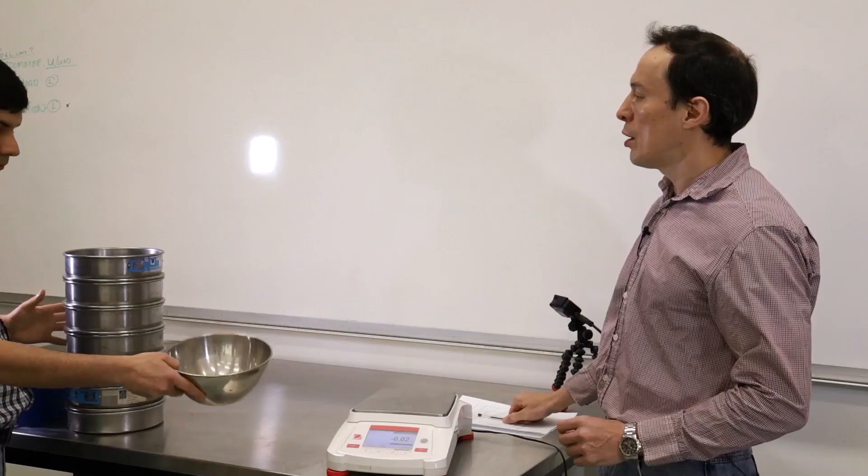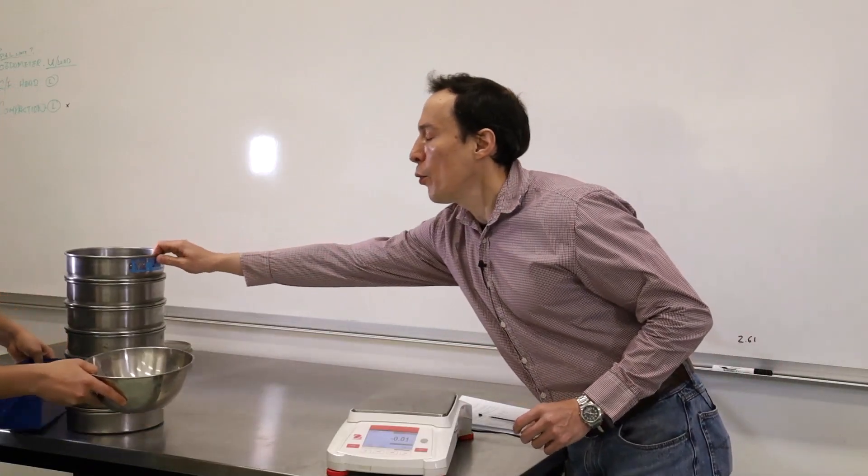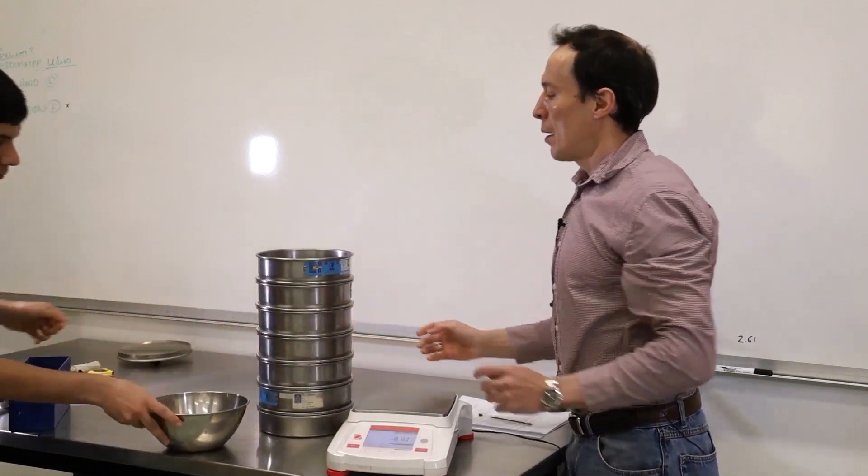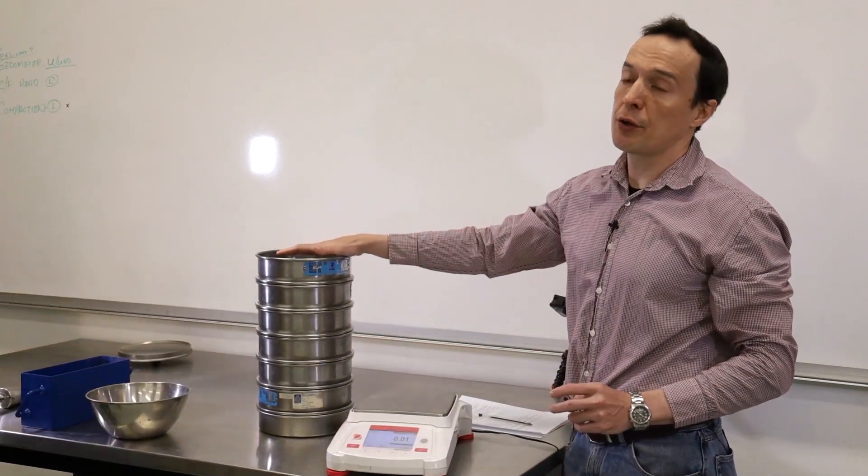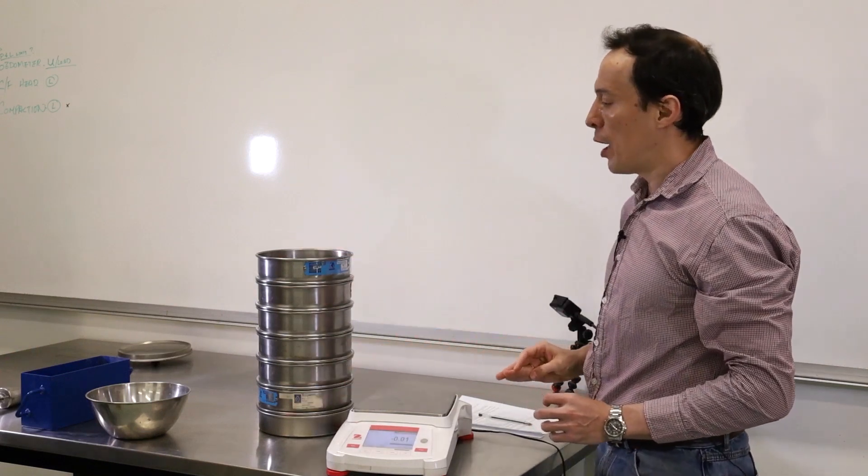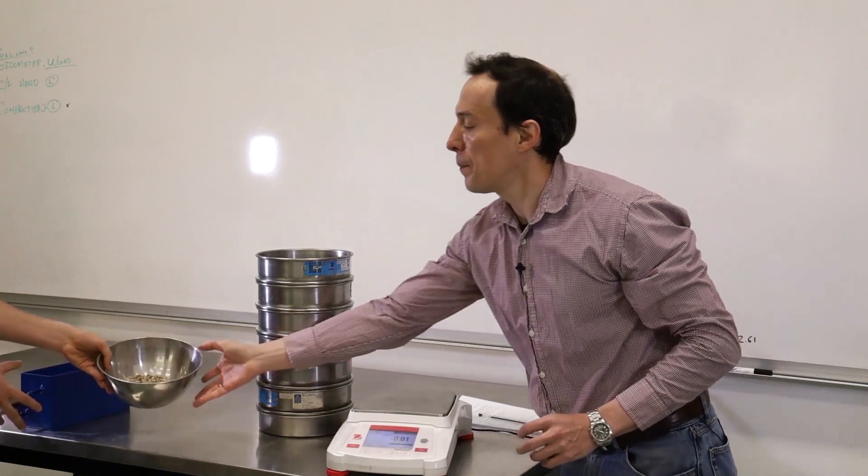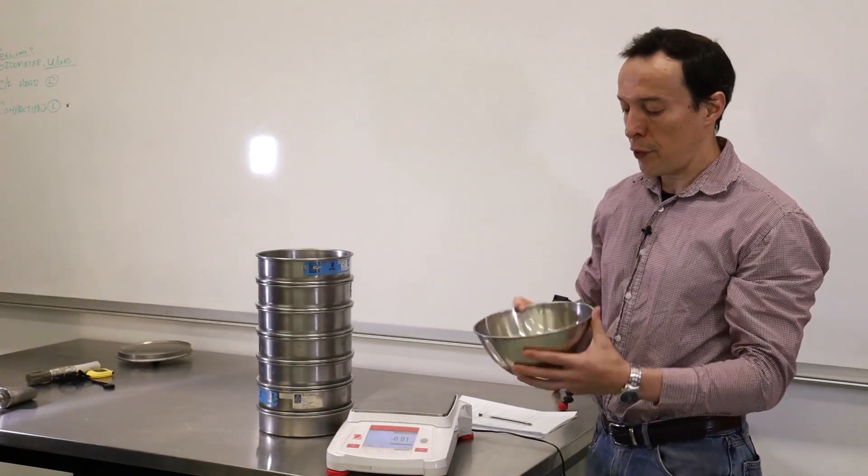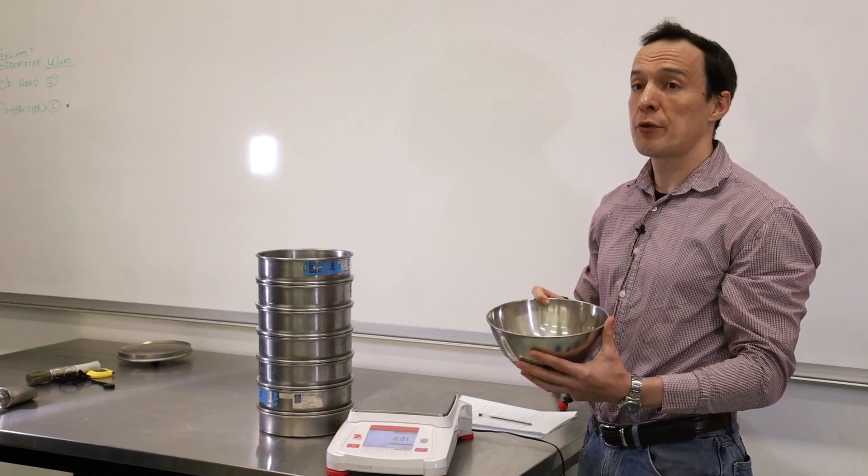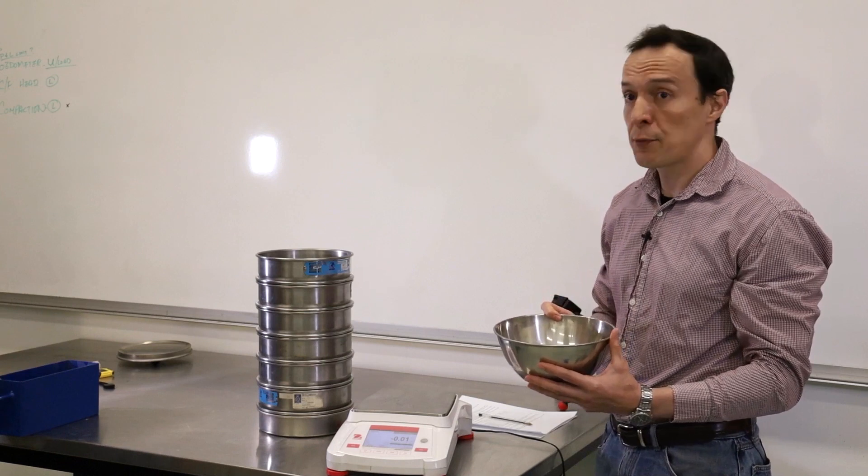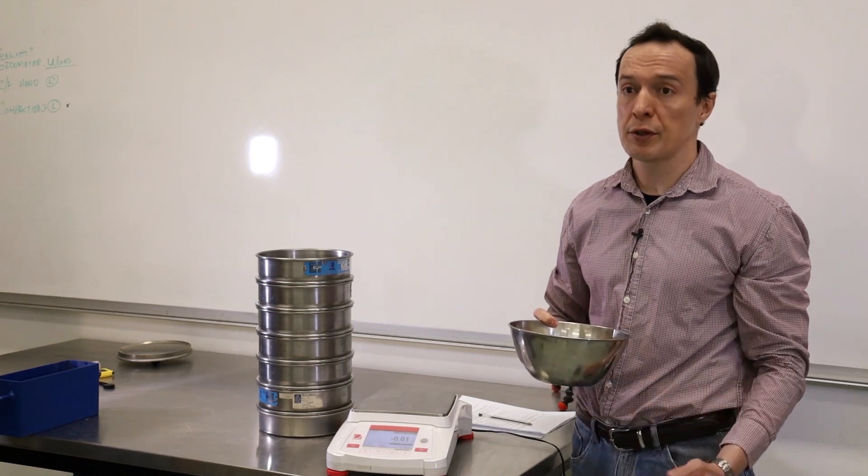Okay, so we put them all together. Make sure that the largest sieve was on the top, the finest sieve was at the bottom. Now we will get some soil sample. We have lots of particles in it so we need to randomly select soil for this test, and this is what we'll do next by using a soil divider.